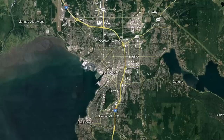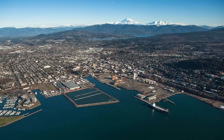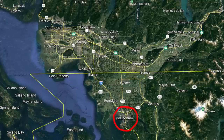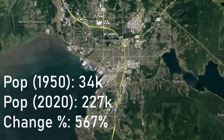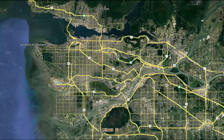Moving to the north, next we have Bellingham, located 21 miles away from the Canadian border. Bellingham is the most northern metro with over 100,000 residents in the country, being incorporated in 1903 from four settlements consolidating. Bellingham is a very nature-oriented city, with easy access to the San Juan Islands and North Cascades. It's also situated at the south end of the Fraser Valley, which is also home to Vancouver in the north. Bellingham has a metro population of 227,000 at the 2020 census, up from 34,000 in 1950, with a growth rate of 567%.